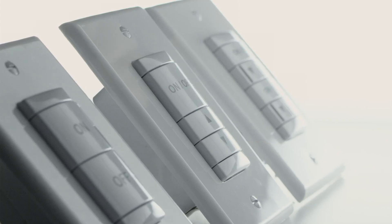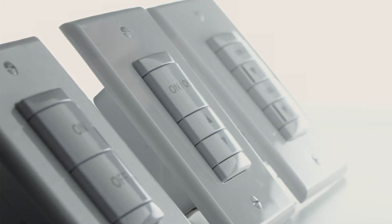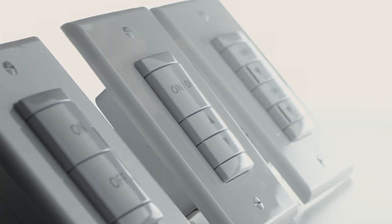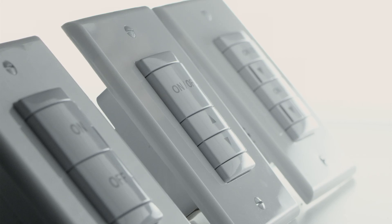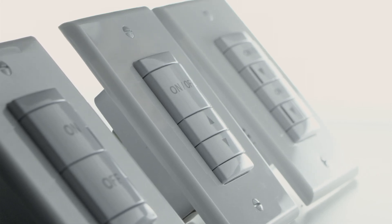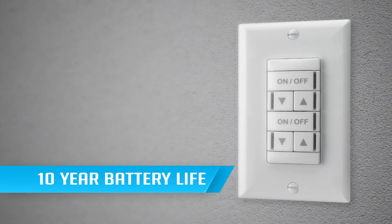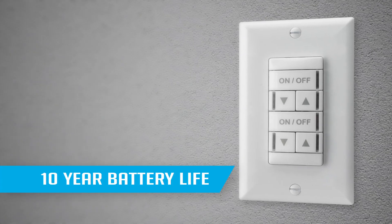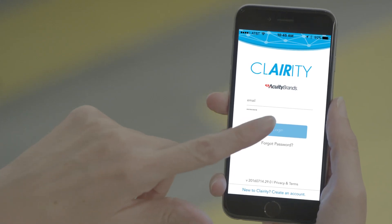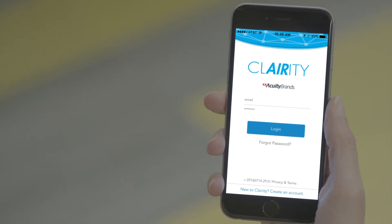The wireless battery-powered wall switches offer many configurations for a range of control and scene options to complement any space, and have a 10-year battery life. The fixtures easily pair with battery-powered wall switches using the Clarity app.